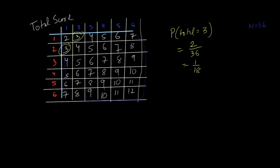Suppose the question is: find the probability that the total is 5. Using this table, we know there are 36 numbers altogether. Out of 36, how many 5s do we have? There are 4 fives, so the probability is 4/36 = 1/9.